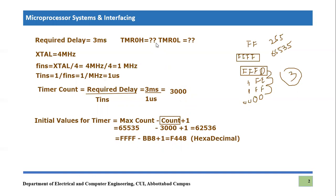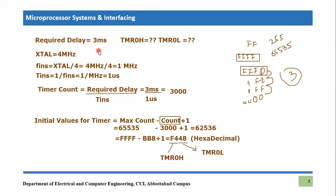These are the initial values for the timer registers. The higher significant byte is F4 and the lower significant byte is 48. So F4 goes into Timer 0H and 48 goes into Timer 0L. That is how you calculate the values of Timer 0H and Timer 0L. Once you have these values, you can write the program for Timer 0 to produce a 3-millisecond delay.